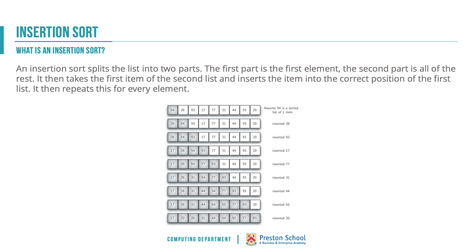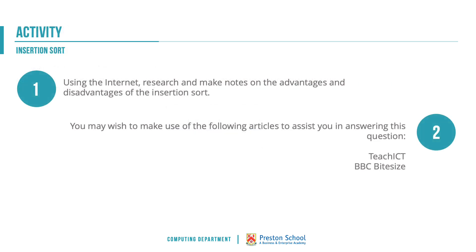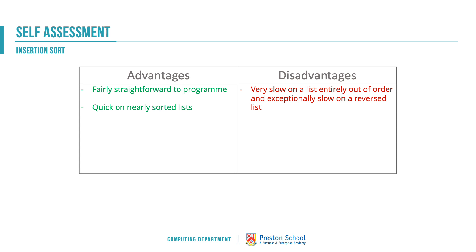An insertion sort might be useful for something like Google, where new websites are added each day - you just insert the new ones into the correct position in the already sorted list. An insertion sort is also fairly straightforward to program. It is very quick on nearly sorted lists - if the list is nearly sorted, insertion sort is probably the quickest option. However, it is very slow if the entire list is out of order, and exceptionally slow if it's in reverse order. The choice of algorithm depends on how ordered the list already is.